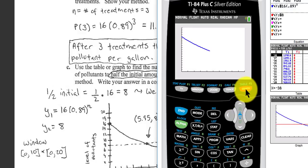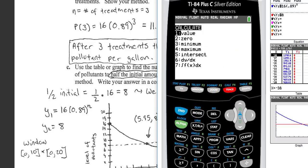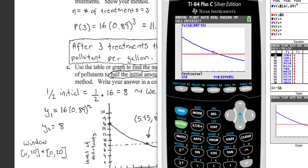First line. Then we should have a straight line at 8 or a horizontal line at 8. The intersection will be 2nd, trace, 5, enter, enter, enter, enter, and looks like we'll call it six treatments to reduce the pollutants down to 8.